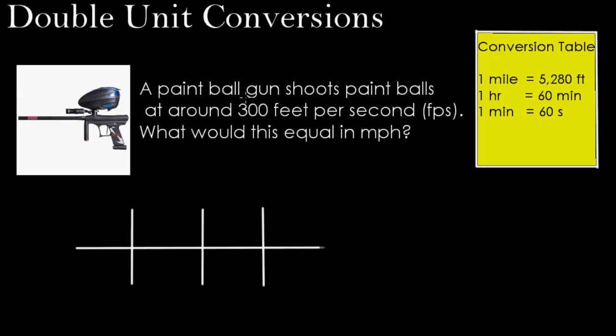In this example, a paintball gun shoots paintballs at around 300 feet per second, or FPS. What would this equal in miles per hour?